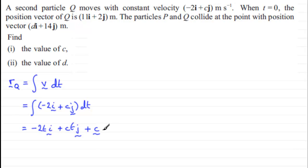Now to get that constant of integration, we know that when t equals 0, the position vector of Q is at 11i plus 2j. So when t equals 0, we've got that R equals 11i plus 2j. And what we need to do is substitute this into this equation here. So if I call that 1 and we sub this into 1,